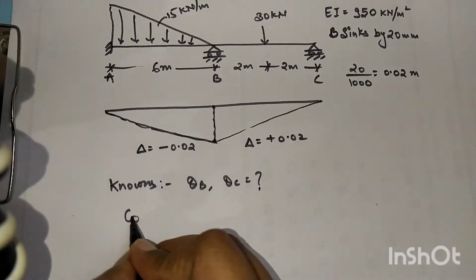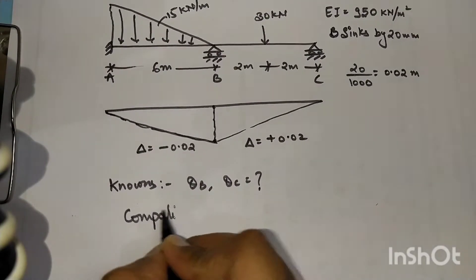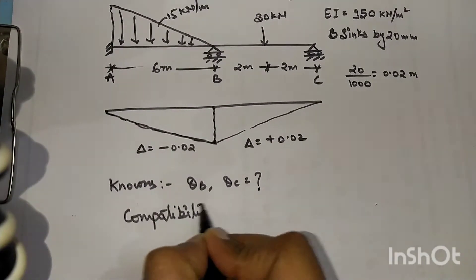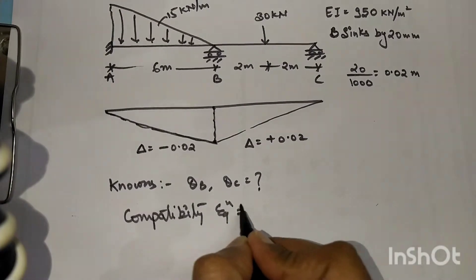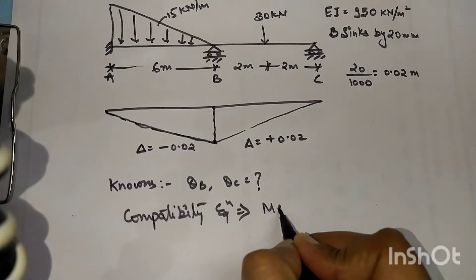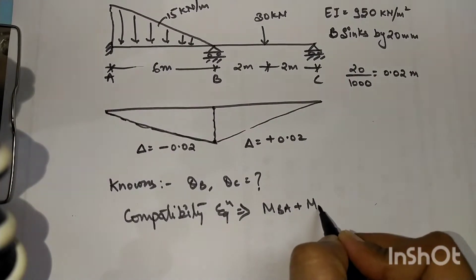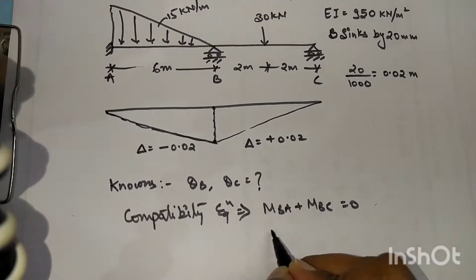We have compatibility equations: at B support, left side and right side moment has to be equal to zero, and at simply supported, that is at C support, the moment has to be zero.